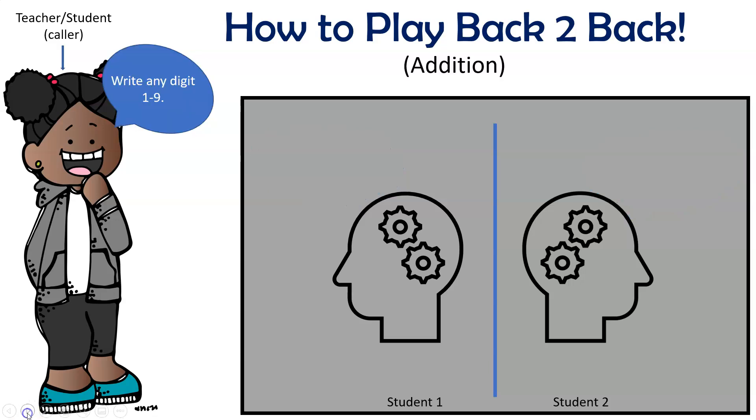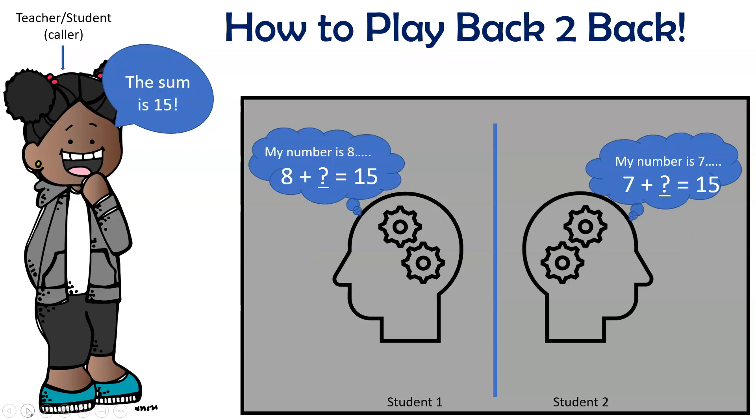Let's try another one. The caller would say, write any digit 1 through 9. And student 1 writes an 8 and student 2 a 7. Then the teacher or student caller would quickly add the two numbers and call out the sum. And make sure to say out loud, the sum is 15. At that point, both students will use strategies to solve for the other student's number. The challenge is to be the first one to guess that number.